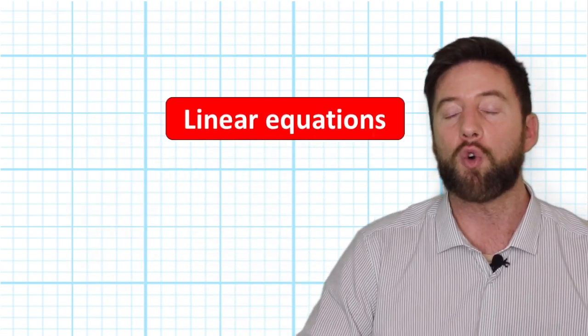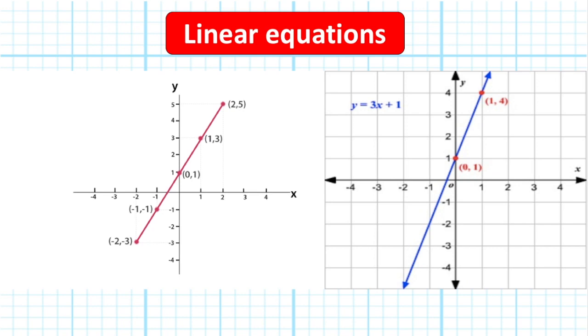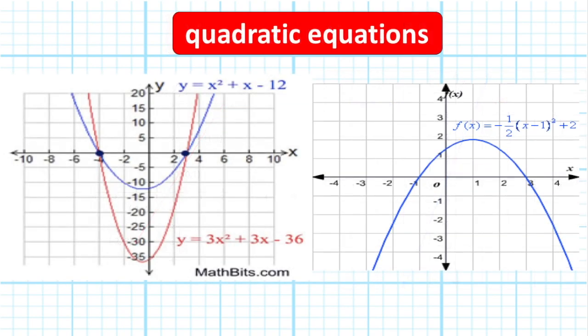For example, there is a whole group of algebraic equations called linear equations, and that is because they create a straight line across a graph. Those kinds of equations are really helpful to tell you the slope of a ramp or how long it's going to take to get somewhere or do something.